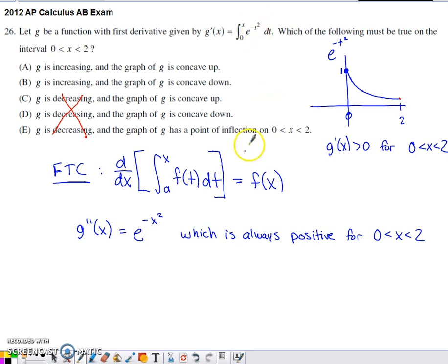So g double prime of x is actually pretty simple. I just copy this function and I put x in place of the t. So what can we say about this second derivative? Well, it's defined as just e to a power. And e to a power is always going to be positive, no matter what ends up in the power.